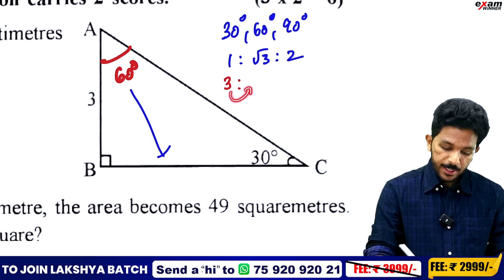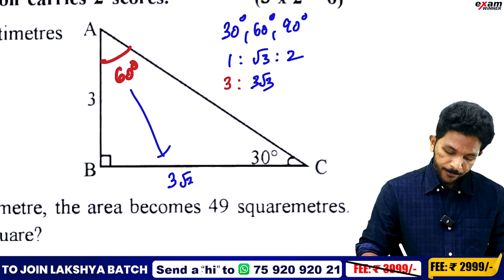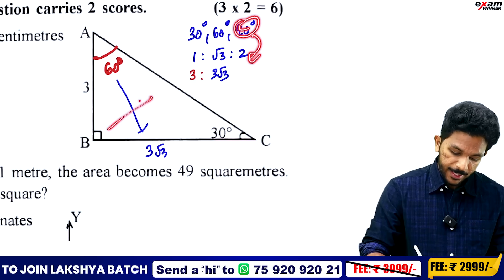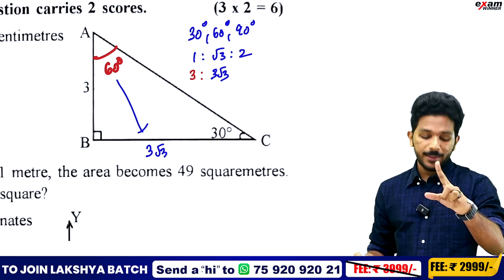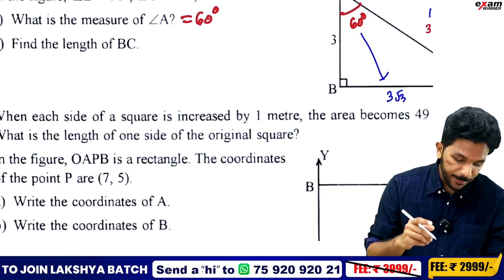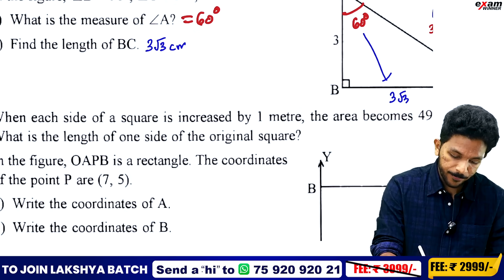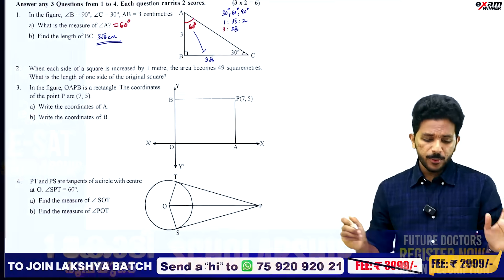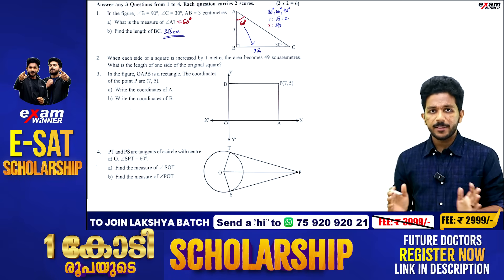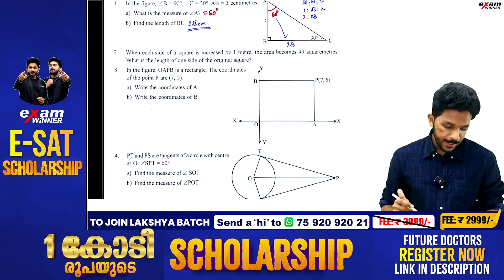The answer for BC is 3√3 cm. If you want to answer using trigonometry, that is also valid. The second question: when each side of a square is increased by 1 meter, find the original side.